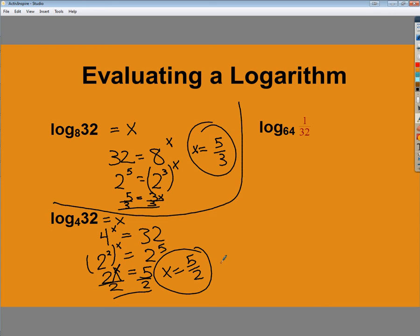Now, the next one is kind of a beast. The log 64 of 1 32nd is equal to x. So I want to know, what can I raise 64 to to give me 1 32nd?